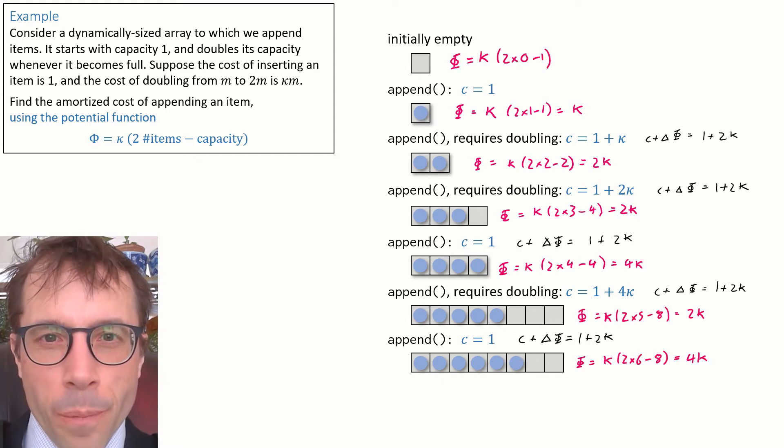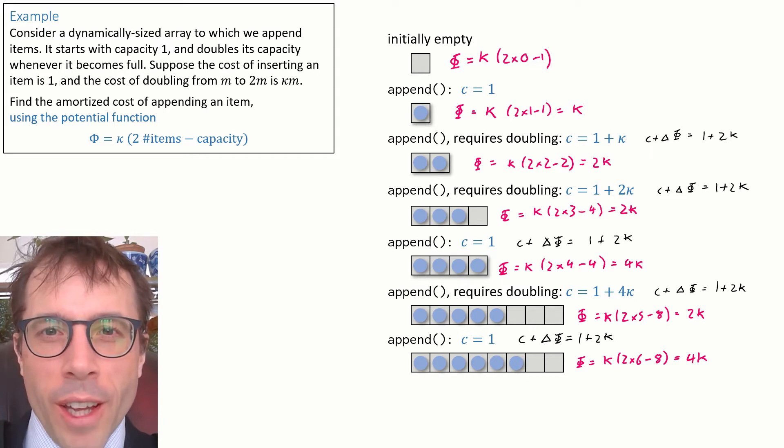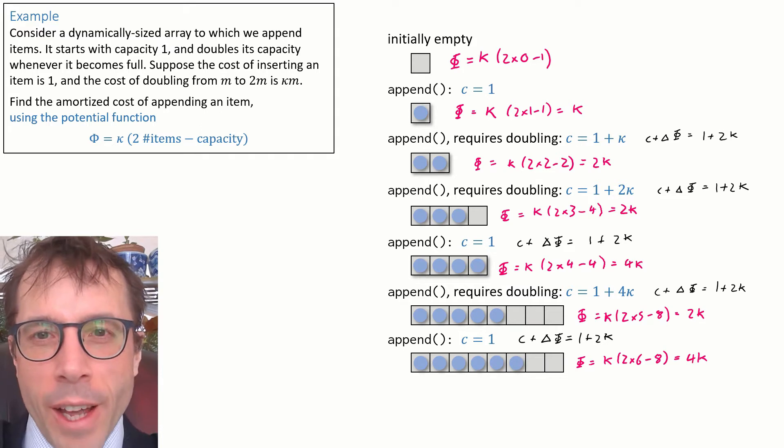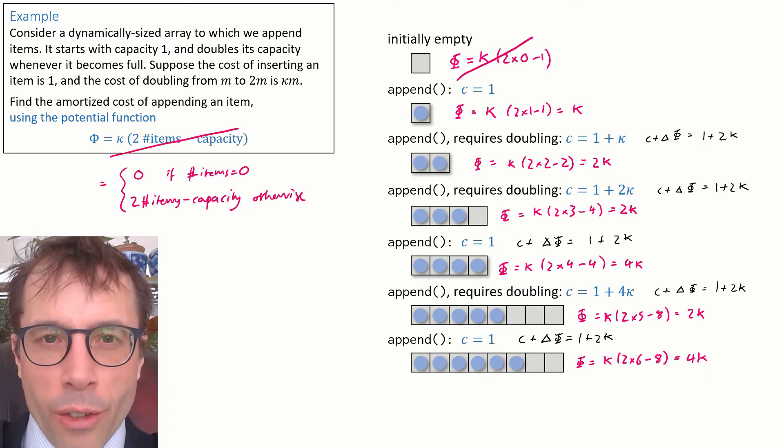You should have spotted a problem. The problem is the potential at the initial empty state, which according to this formula comes out as minus kappa. That's not allowed. The definition of potential function said it had to be above or equal to zero everywhere and equal to zero at the initial state. We can fix this by choosing a different potential function. This is how we should have defined it.